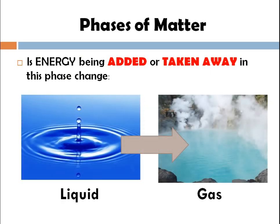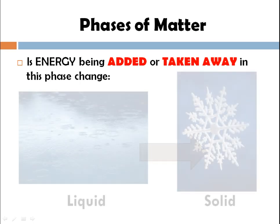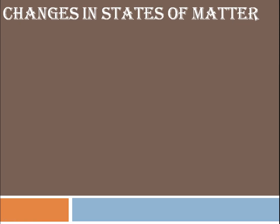If you have a liquid and add heat, it converts into the gaseous phase. When you take away the heat, the gaseous phase converts back into liquid. Now if you have melted Cadbury and keep it in the freezer — removing the heat — it immediately solidifies and becomes hard. When heat is removed from a liquid phase, it converts into solid.